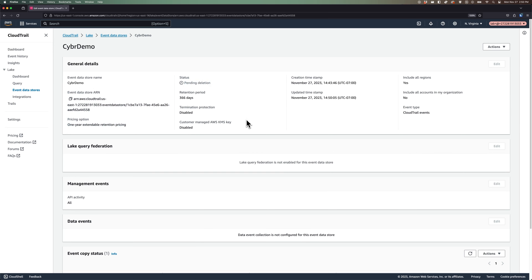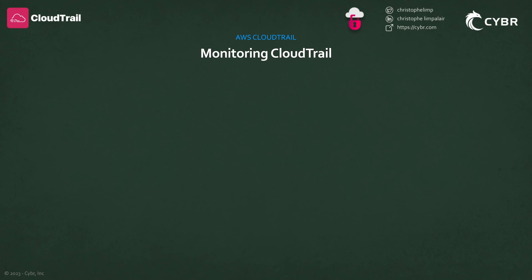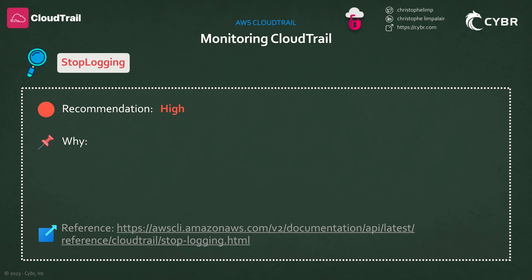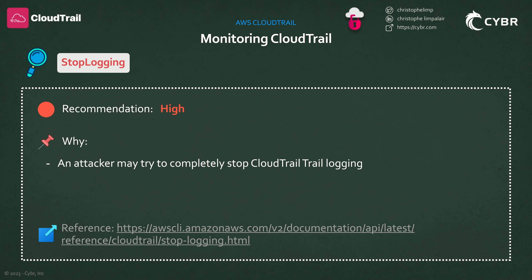The first topic I'd like to talk about when it comes to protecting our CloudTrail deployment is about monitoring CloudTrail itself. It's important to monitor the CloudTrail service and to keep a log of changes that are made to it. Attackers always want to hide their tracks, so they may attempt to stop the CloudTrail service or to make other modifications. And if that ever happens, you need to not only get notified, but you also need to keep track of those changes. So let's start by talking about what you should be monitoring at a minimum, and then we'll talk about some ways of implementing that.